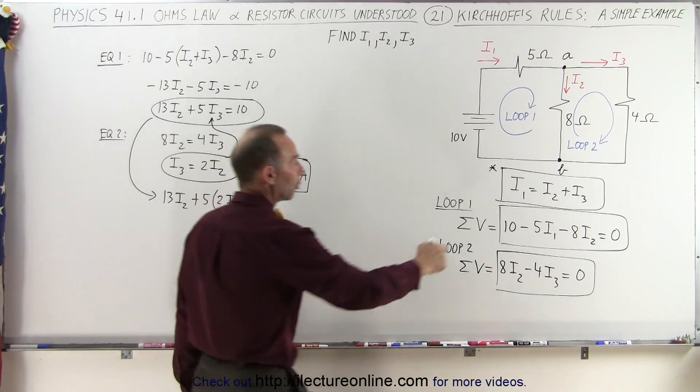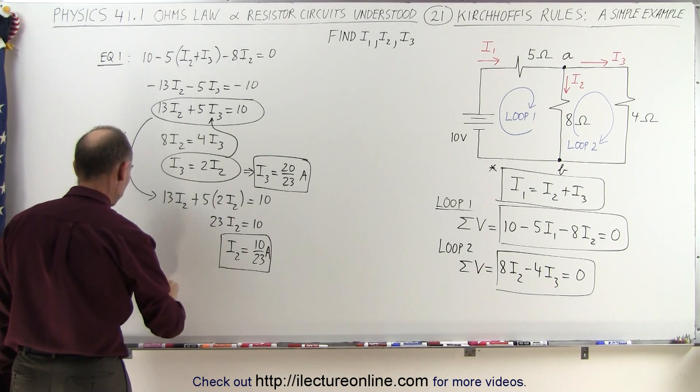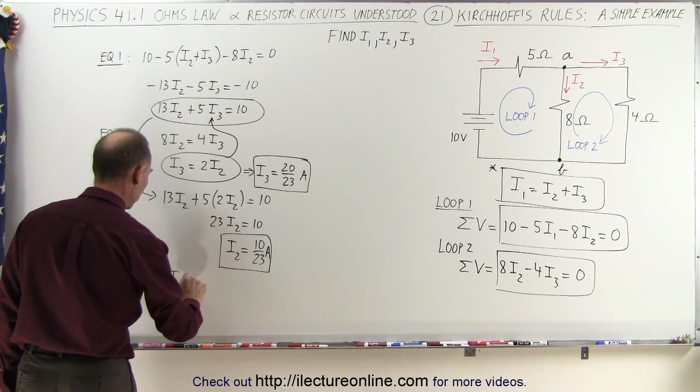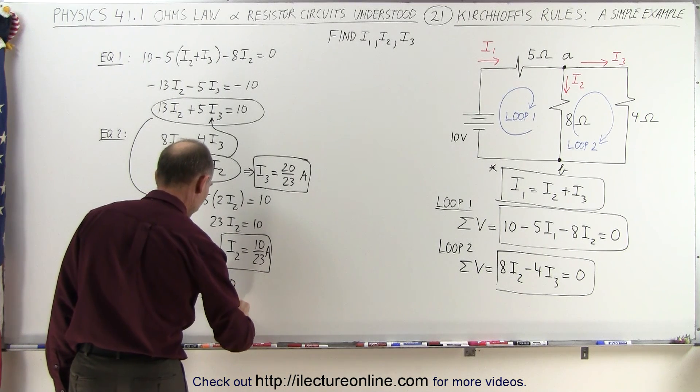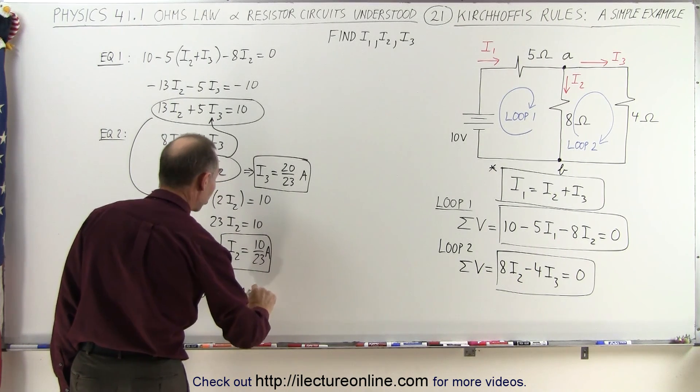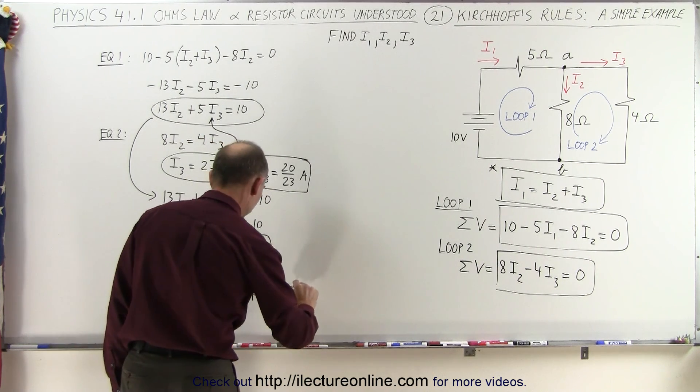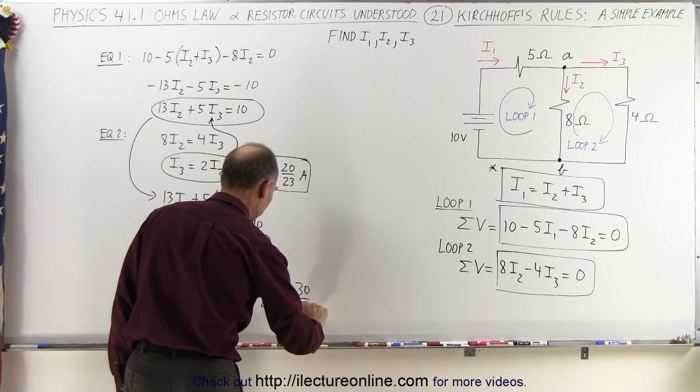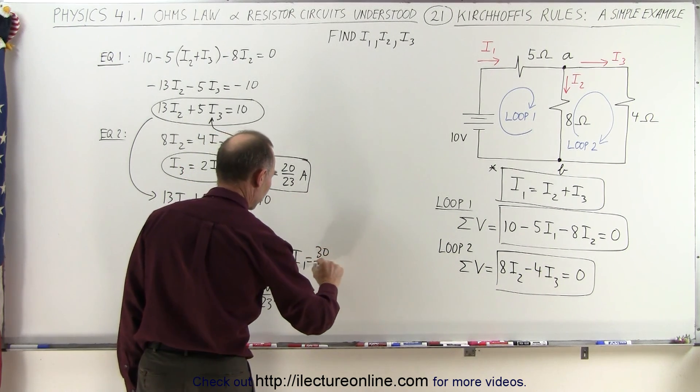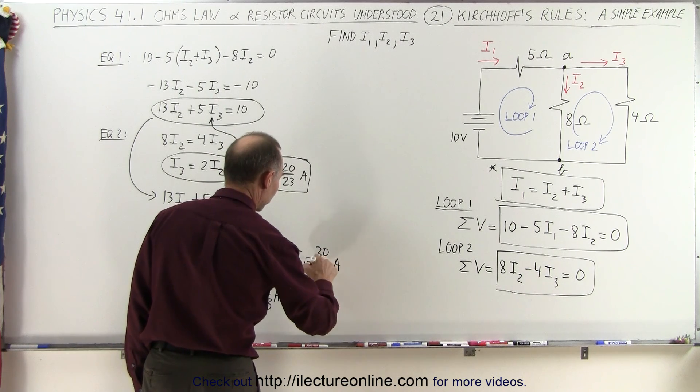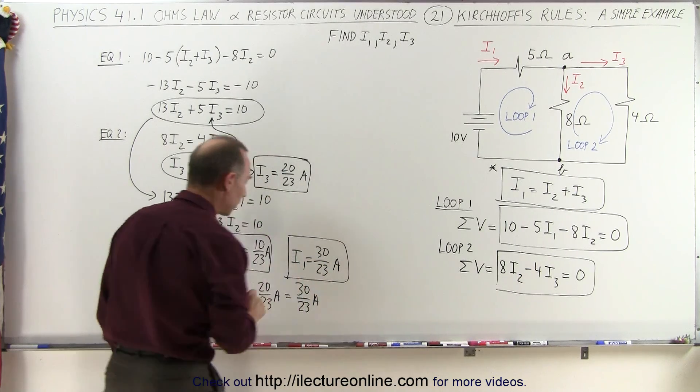So now I have I2 and I3. Now I'm going to go back to my first equation, which has I1 in terms of I2 and I3. So now I can write that I1 is equal to I2 plus I3, which in this case is 10 over 23 amps plus 20 over 23 amps, which means that together it is 30 over 23 amps. In other words, I1 is equal to 30 over 23 amps.